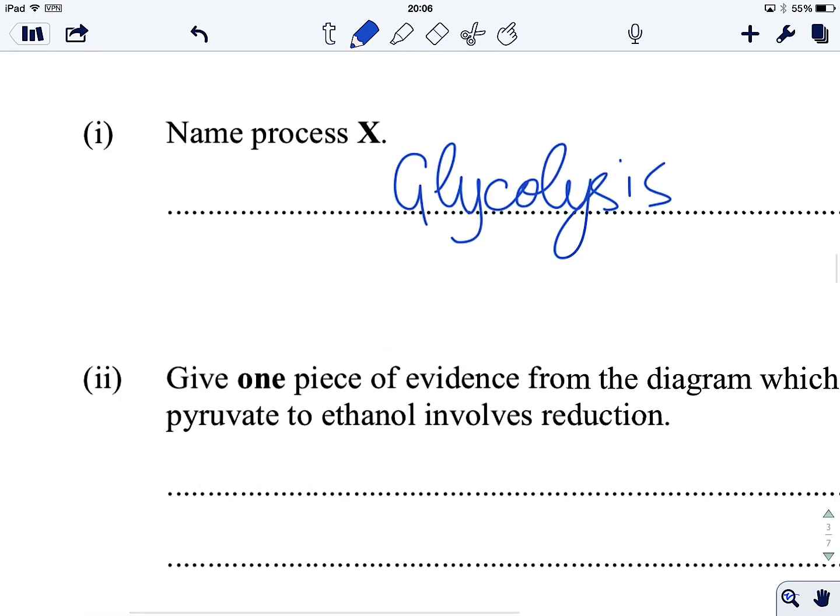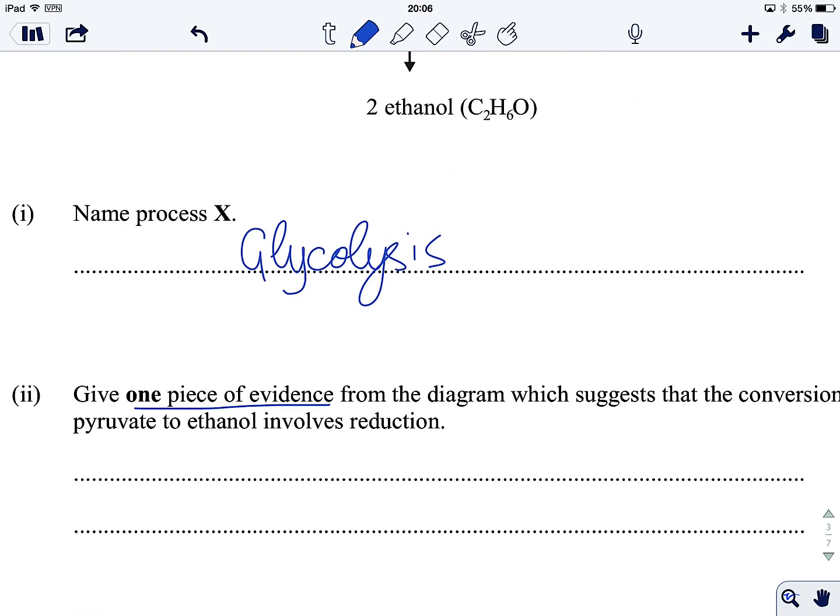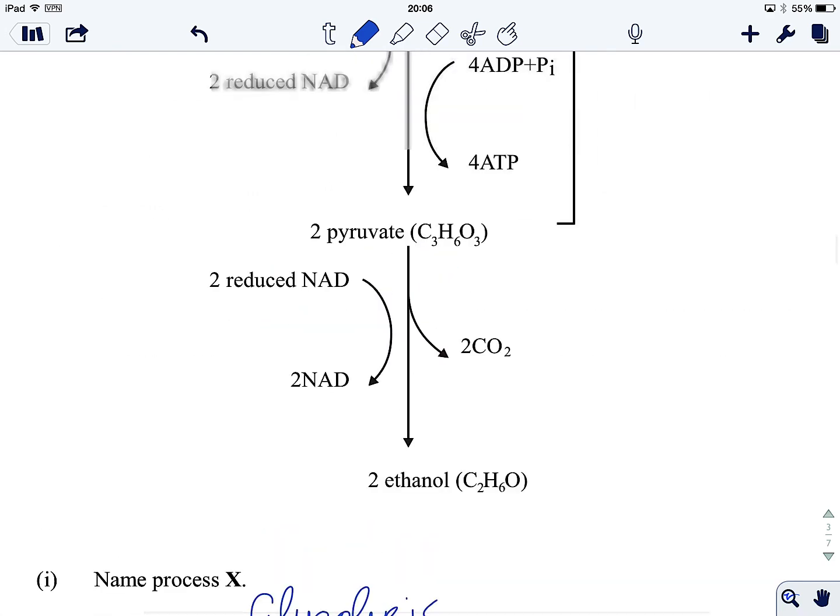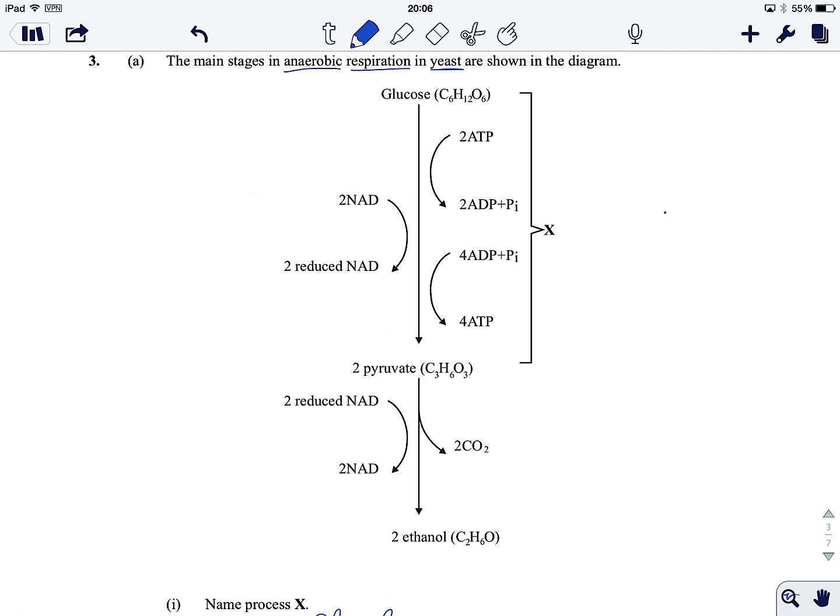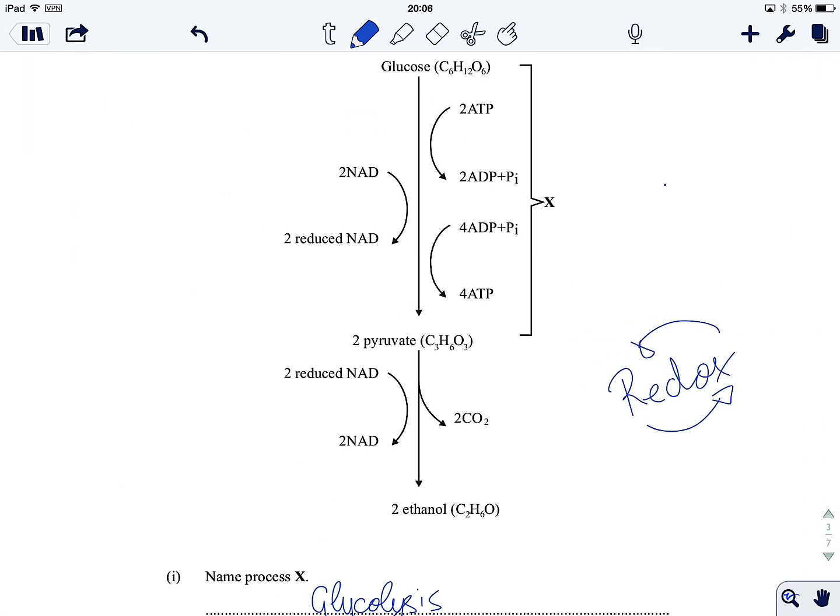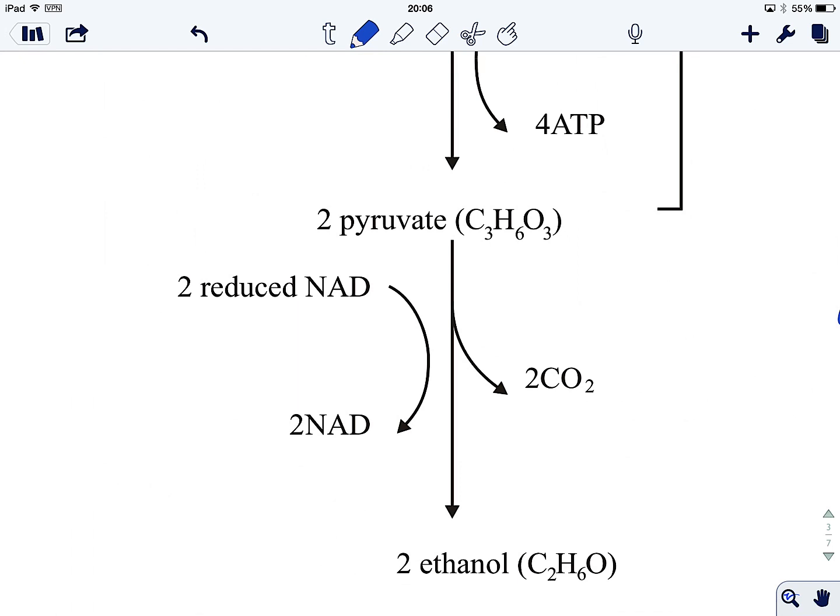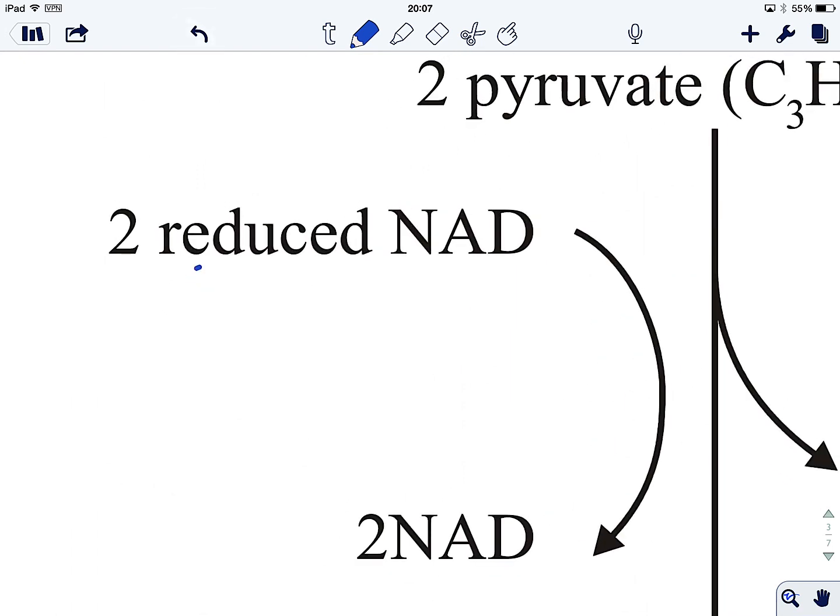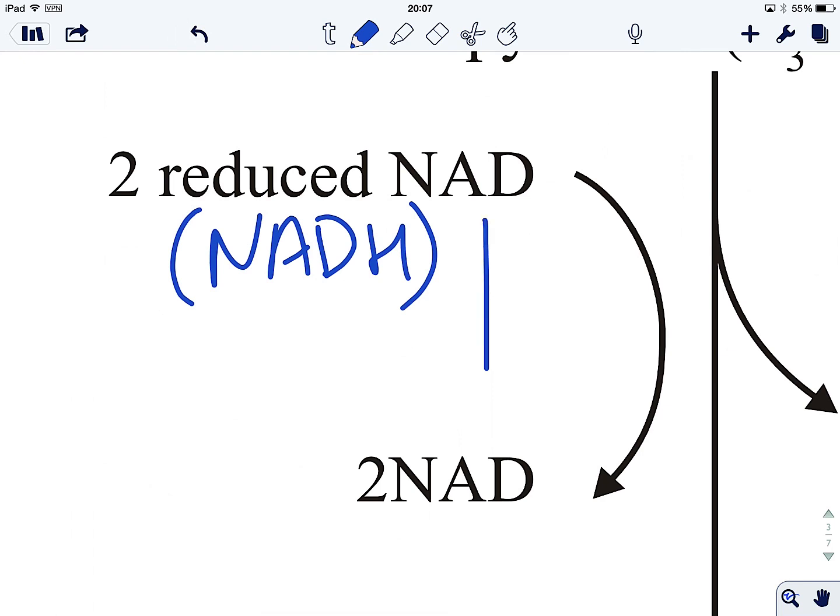Give one piece of evidence from the diagram which suggests that the conversion of pyruvate to ethanol involves reduction. In respiration, so much is about redox, about one compound being reduced while the other compound is oxidised. This is really key. What we've got to do to spot when there's a reduction happening, we've got to spot something being oxidised. Our key here is by looking at the state of the coenzyme. That reduced coenzyme comes in and becomes not reduced, which means it's being oxidised. It goes in as reduced NAD or NADH.